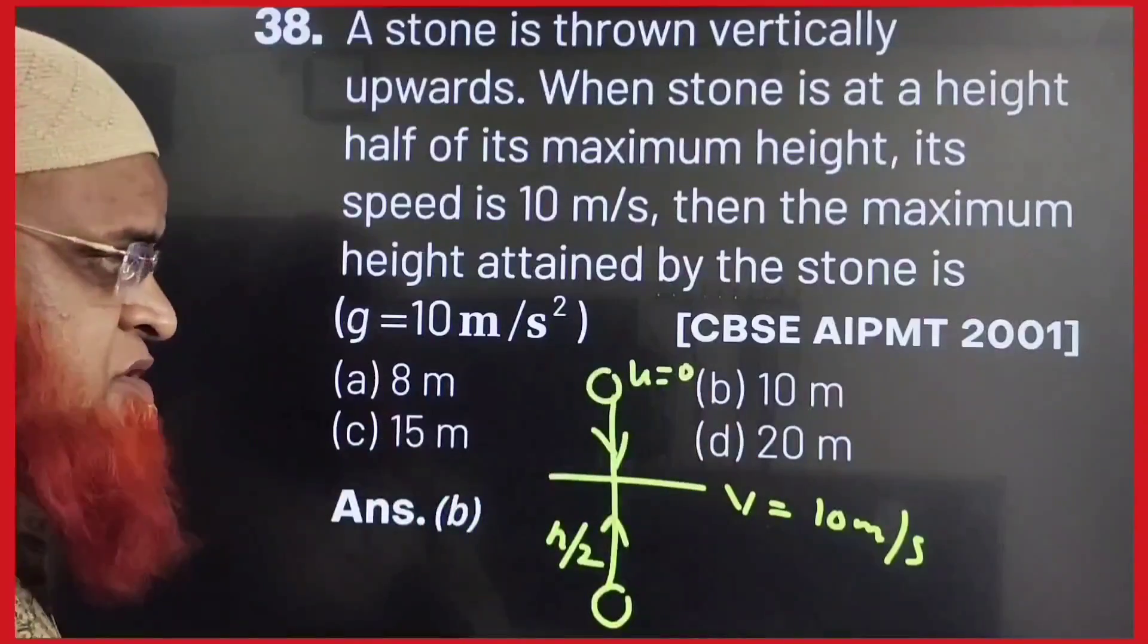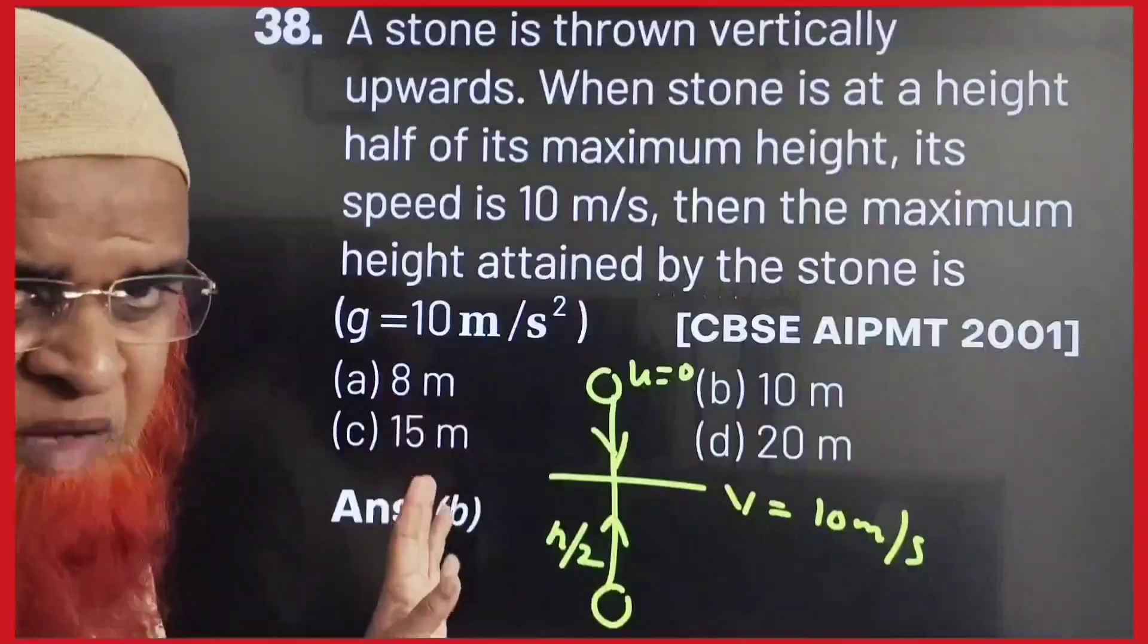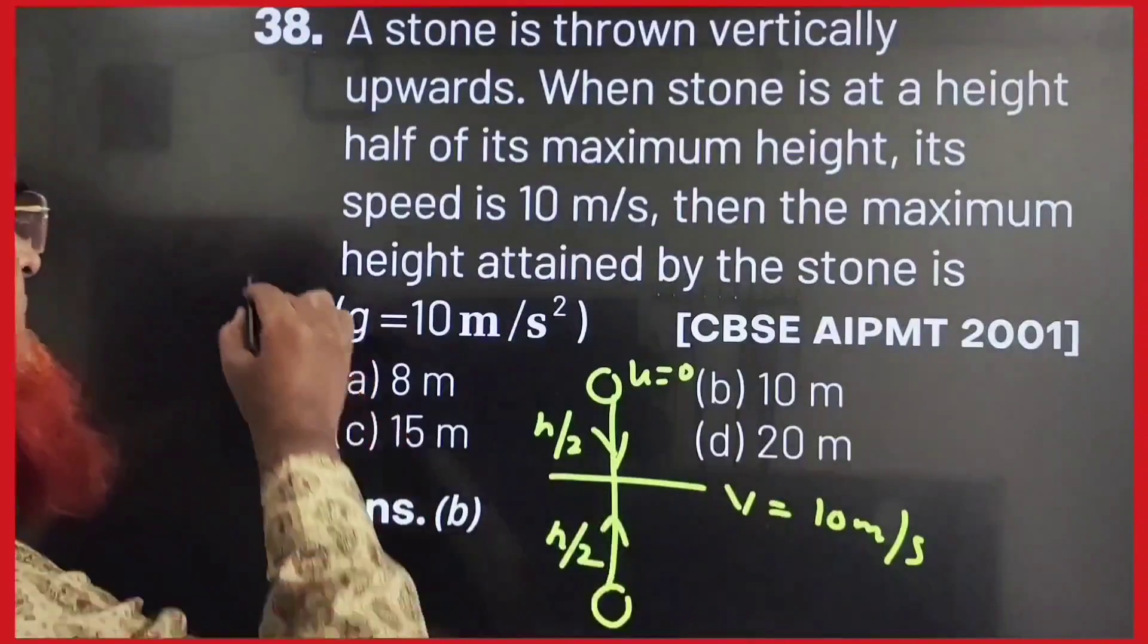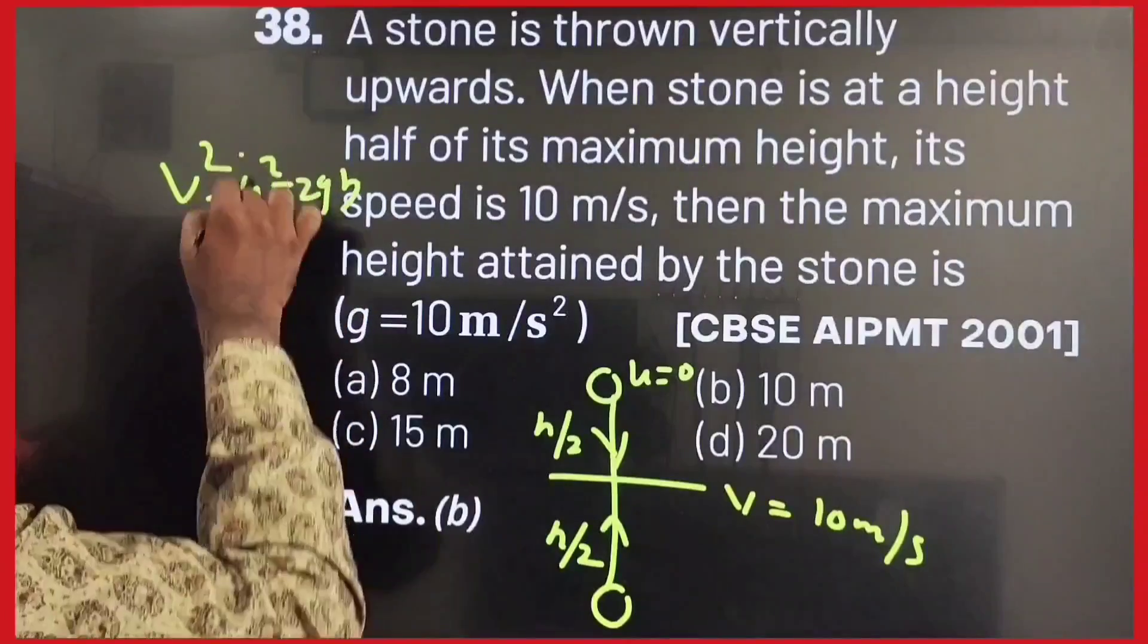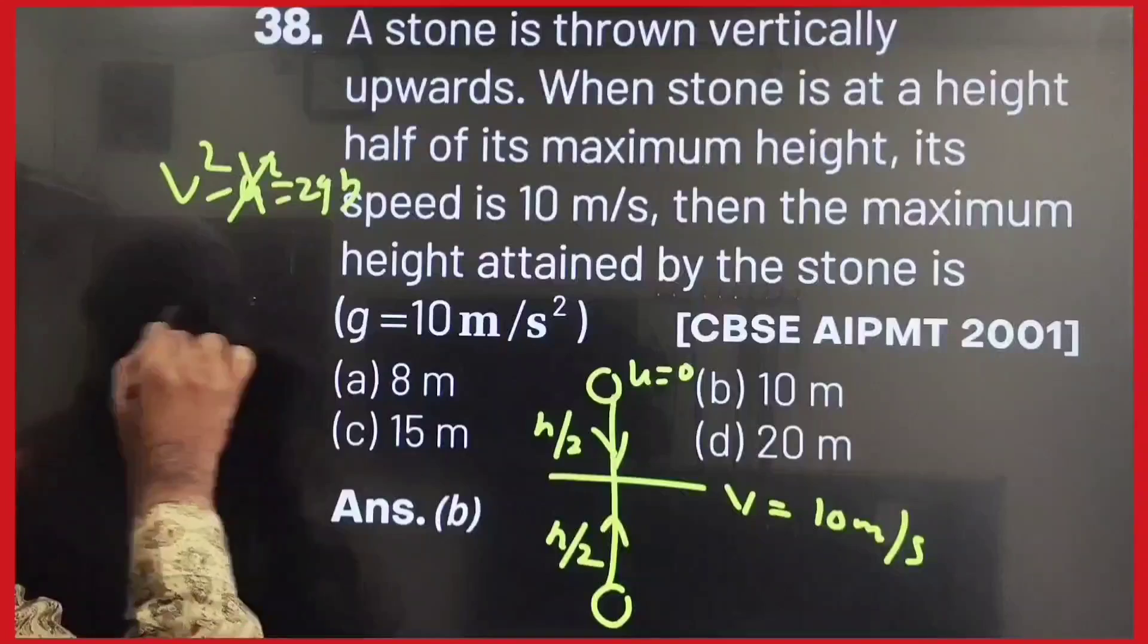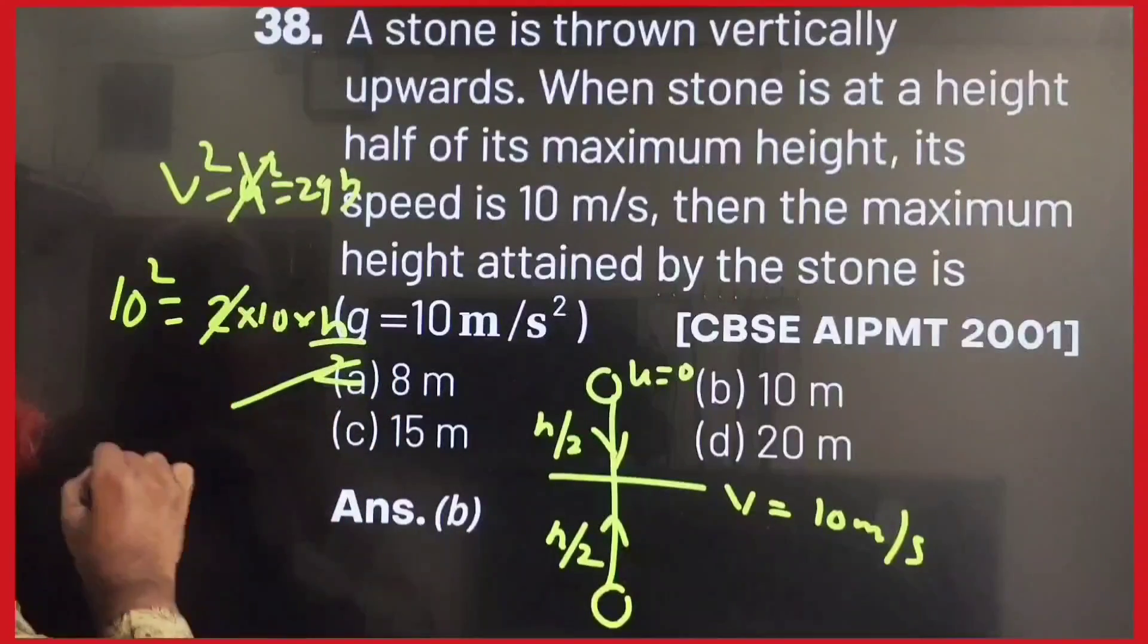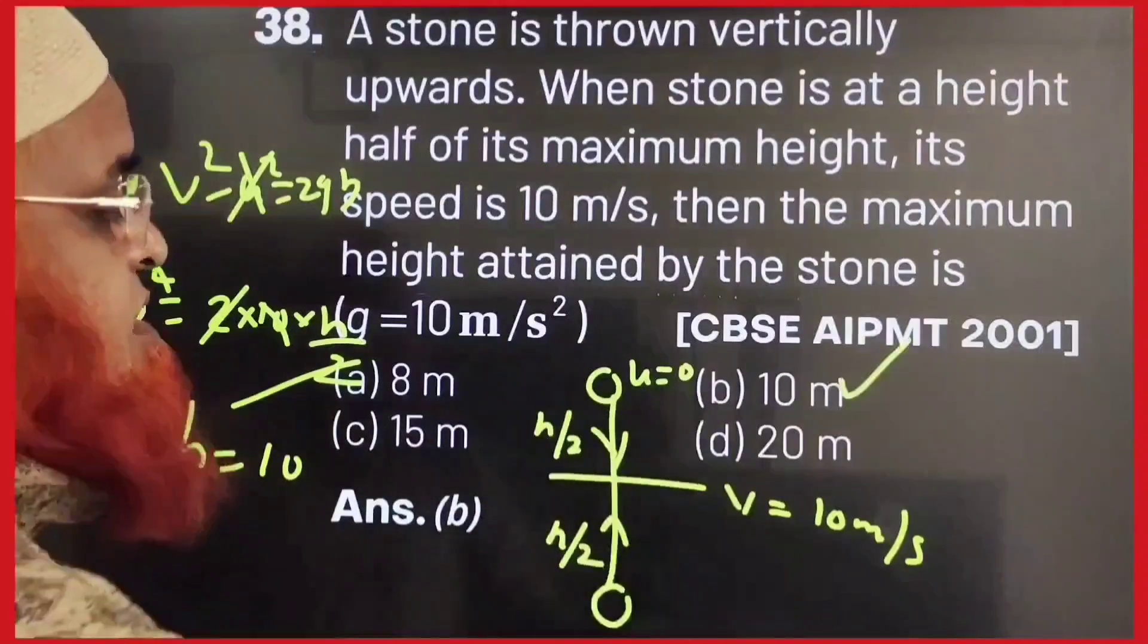In the downward direction, initial velocity will be zero. And at this point, either it is going up or down, velocity will remain same. So, now it will become very easy. Upwards, half of the height I will take now. So, we will write v square minus u square is equal to 2gh. Initial velocity will become zero when you take from top to bottom. So, it will become 10 square is equal to 2 into 10 into h by 2. So, 2 gets cancelled and 10 square gets cancelled, h will become 10 meters.